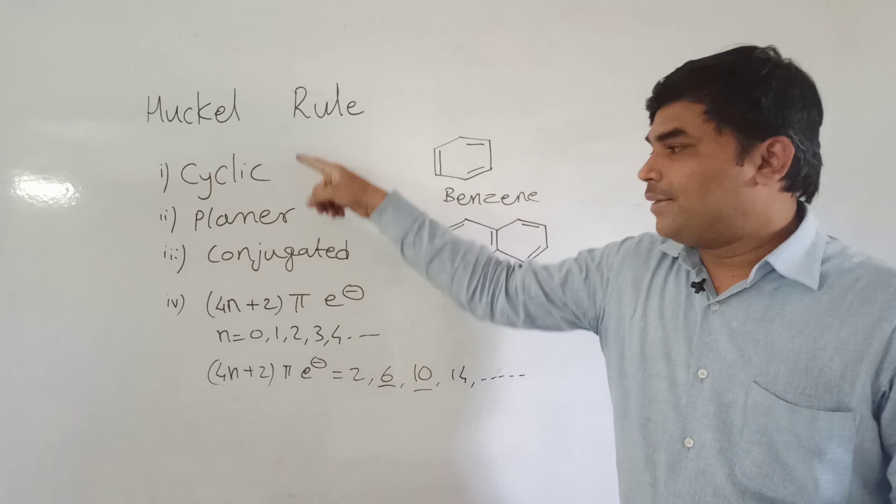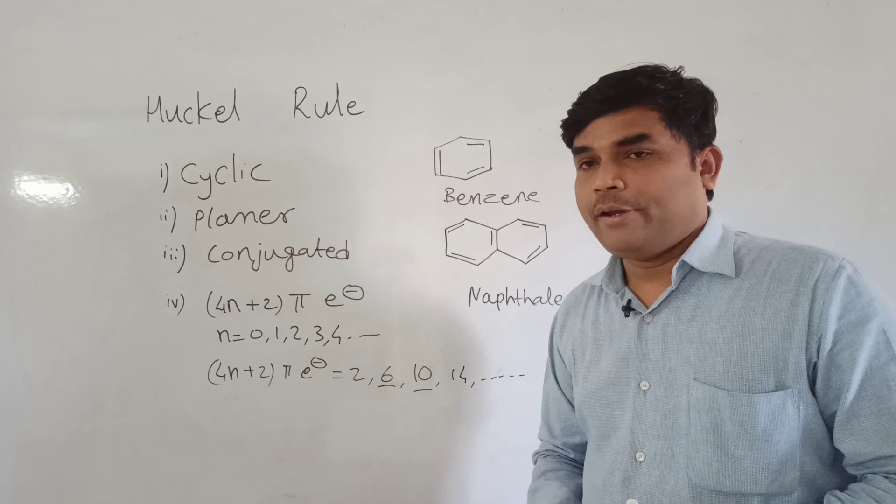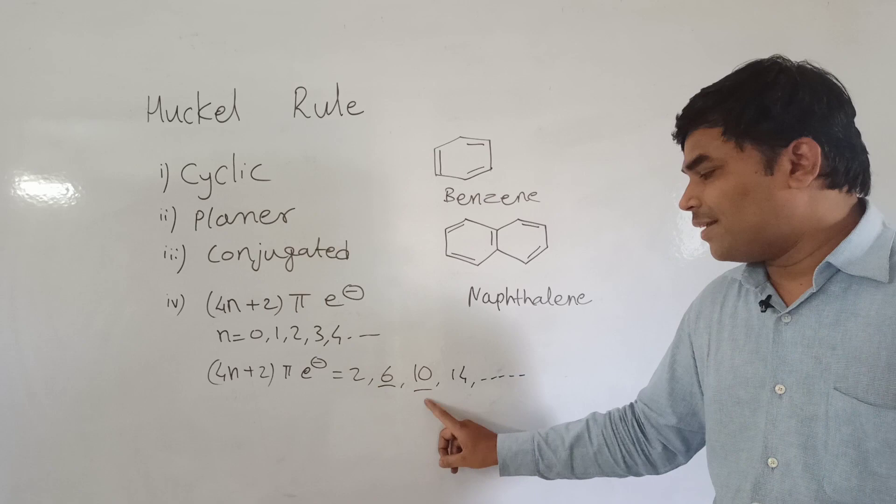That compound must be cyclic, planar, conjugated, and containing 4N plus 2 pi electrons. That is 2, 6, 10, 14, et cetera, these electrons.